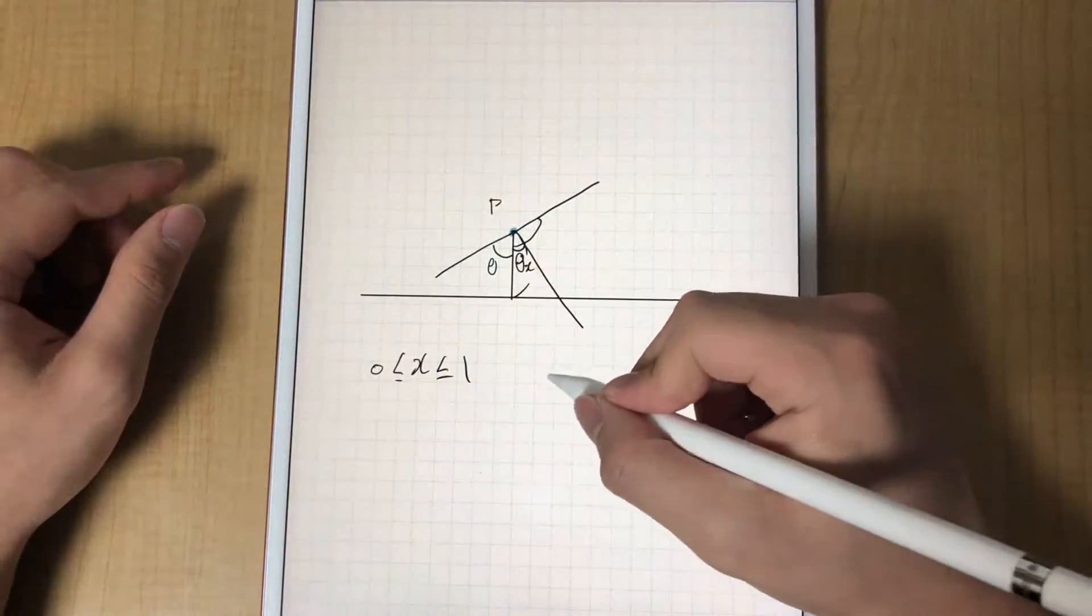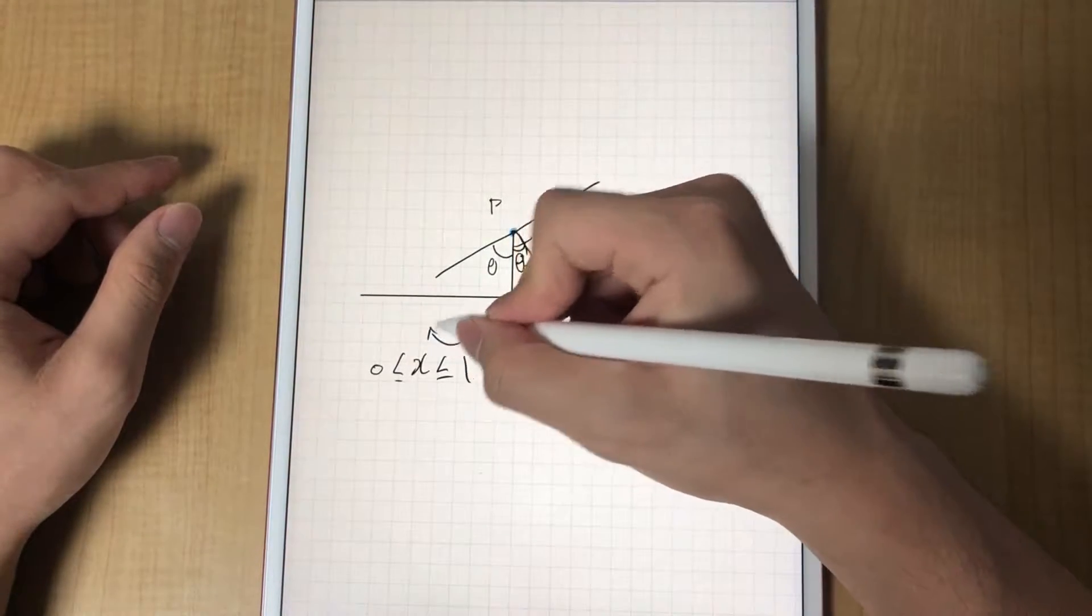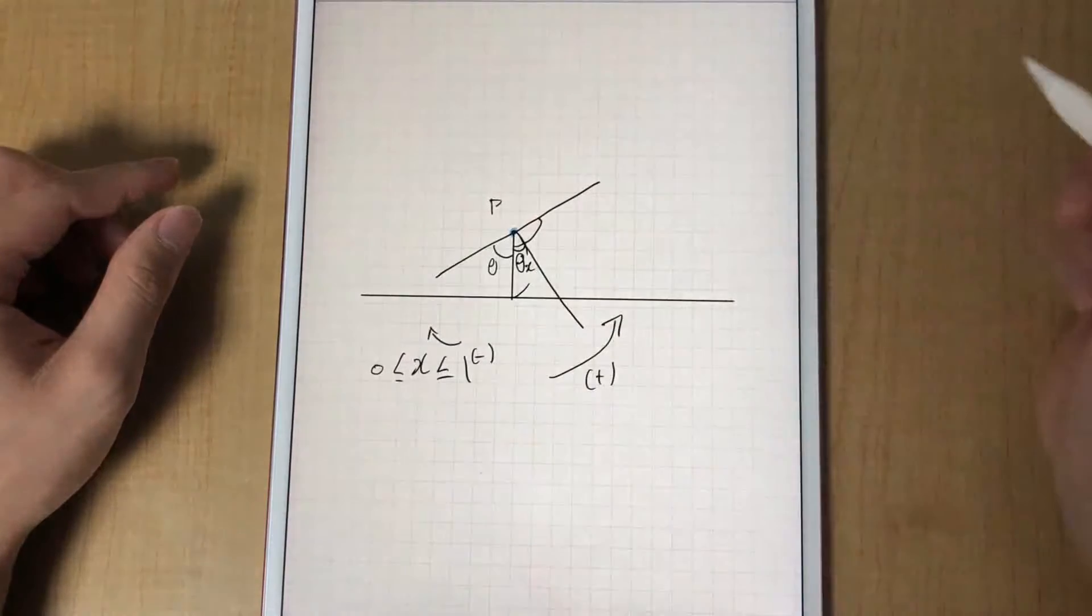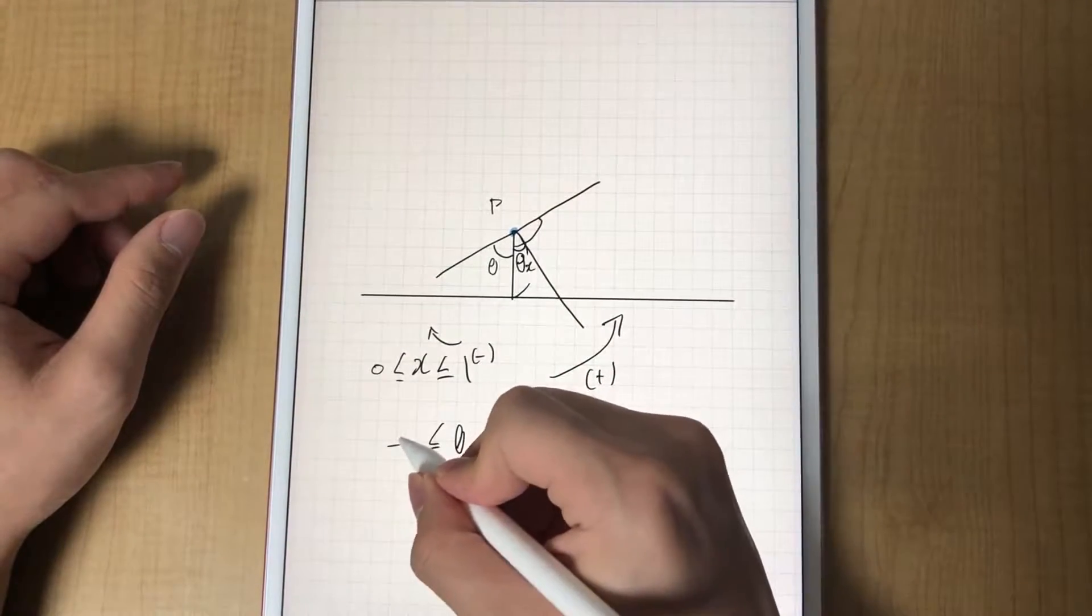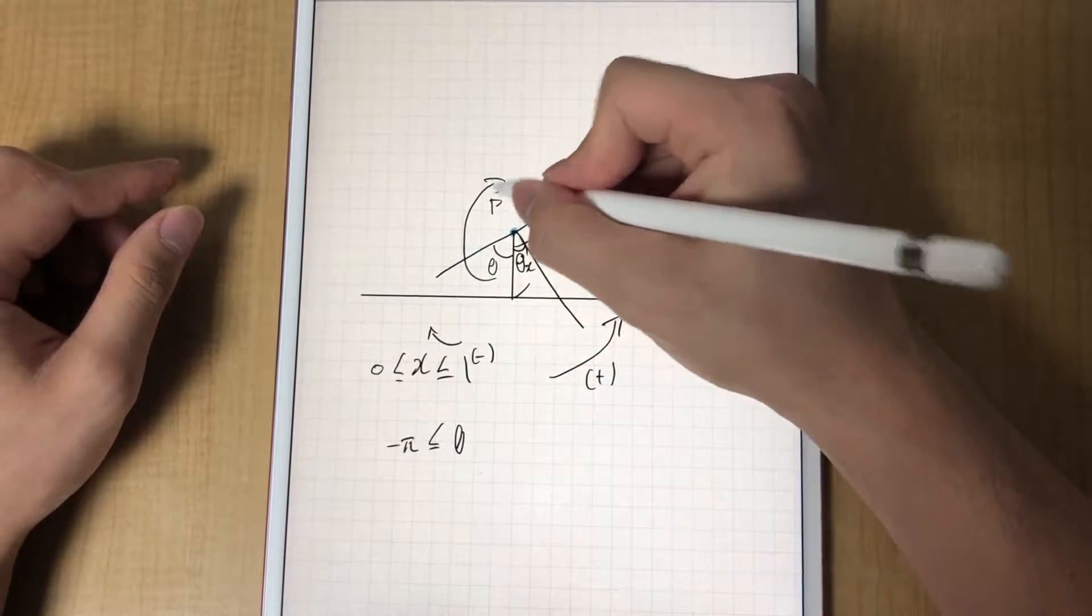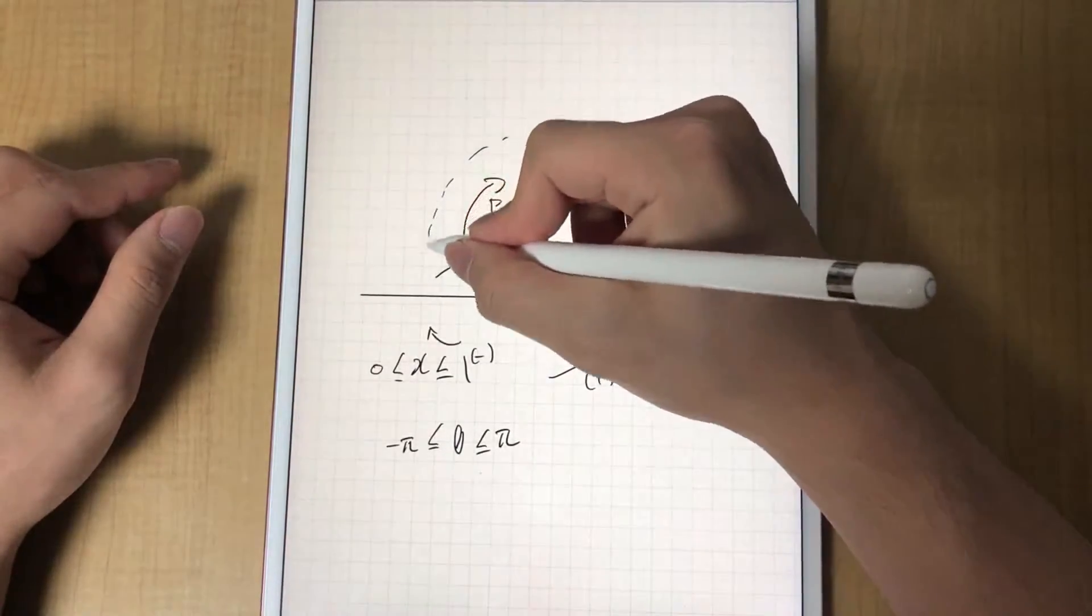I'll put counterclockwise as positive and clockwise as negative. So zeta can range from minus pi to pi, making a circle of possibilities.